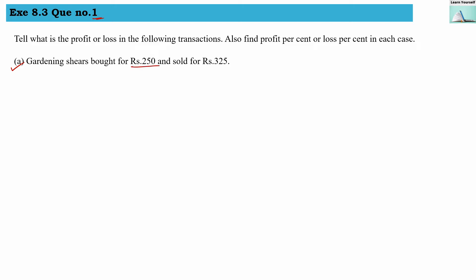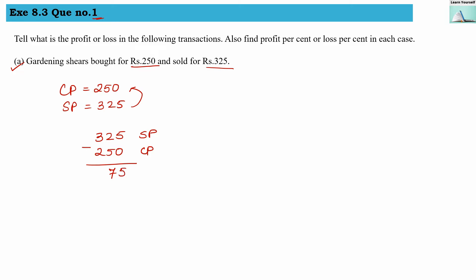Question number one (a): Gardening shears bought for rupees 250 and sold for rupees 325. The cost price is 250 rupees and the selling price is 325. Since selling price is more than cost price, this is a profit. Subtracting: 325 minus 250 gives us 75 rupees as the profit.